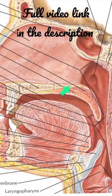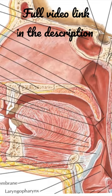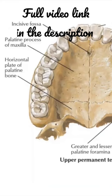You have the hard palate which forms the anterior two-third and the soft palate which forms the posterior one-third. Now we will study about the hard palate. This is the hard palate.